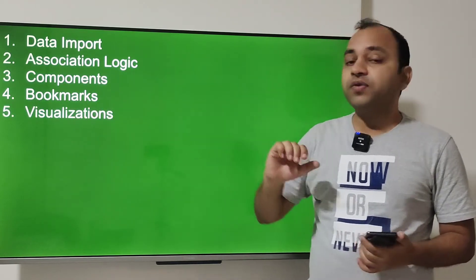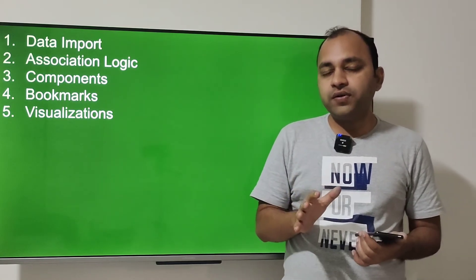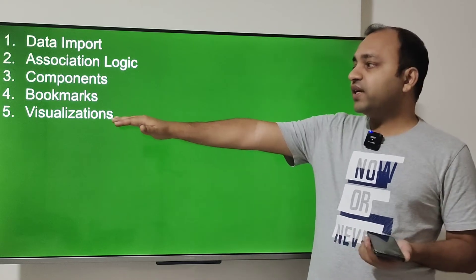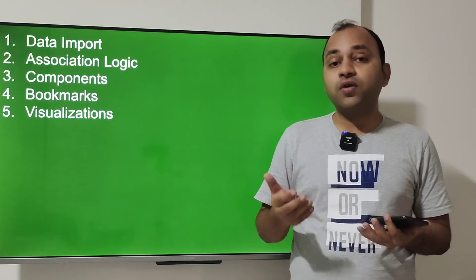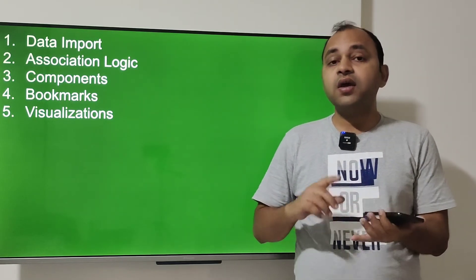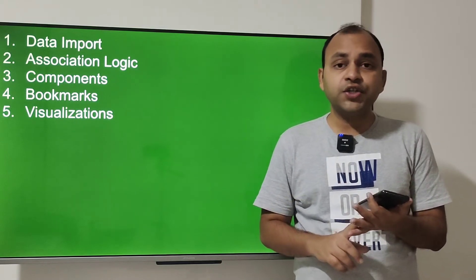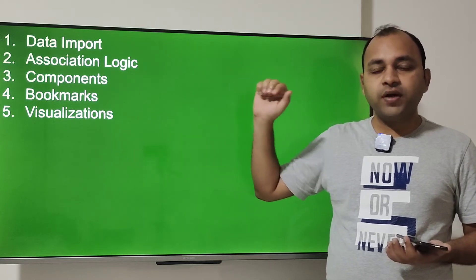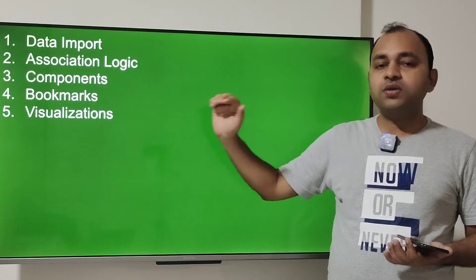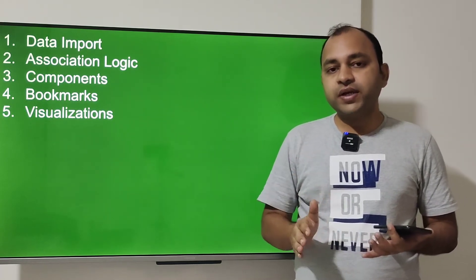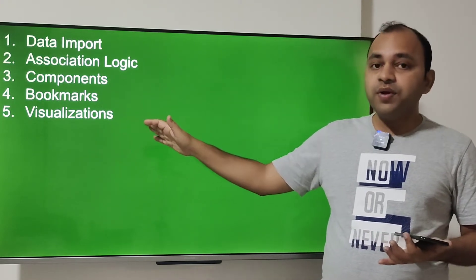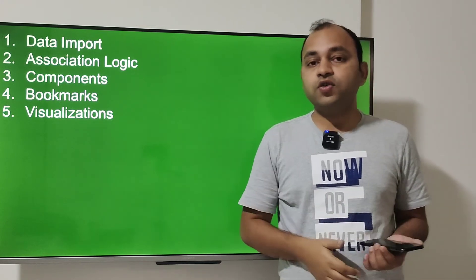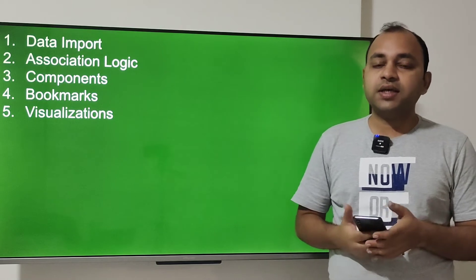The fifth topic is visualization. Qlik Sense has around 15 different chart types, including things that are custom charts in other tools but built-in here. Learn how to configure them: how to provide x-axis and y-axis values, dynamic titling, conditional formatting, and other properties. Create each visualization, interpret it, and explore its properties. This may go beyond three hours — don't stop, keep focusing on visualization as it's what you'll do day in, day out.